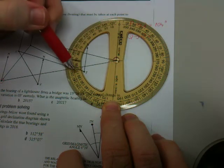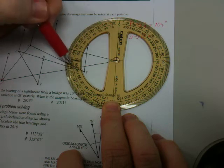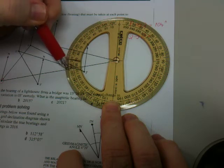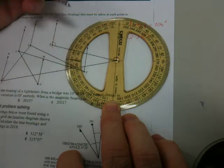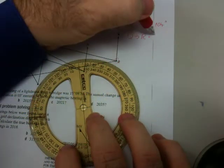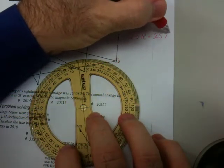And in this case, we've got 250 there, 260 there. So we have something like 255, 256, 257, 257 degrees.